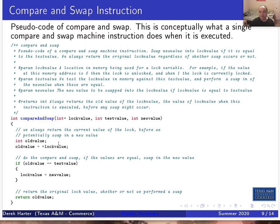Here's pseudocode of what a compare and swap or compare and exchange does. This is just pseudocode — conceptually what happens — but keep in mind we're talking about a hardware-implemented machine instruction that executes atomically. Even though the textbook shows this like a C function, it's not a C function, it's an atomic machine instruction. Compare and swap takes three parameters: a memory address (the lock value as a pointer), a test value, and a new value. It always returns whatever the original value in memory is, and then if the old value equals the test value, it swaps in the new value.